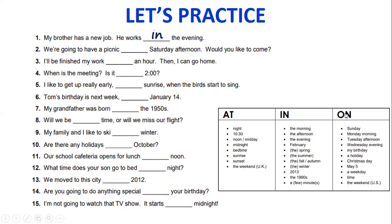On. Cuando hablamos de días específicos, on Sunday, on Monday morning, on Tuesday afternoon, on Wednesday evening, on my birthday, on a holiday, on Christmas day, on May 5th, on a weekday, on time, on the weekend. Vean que aquí en el American English para weekend utilizamos on, y en el British English utilizamos at. Y por qué si para morning afternoon usted dice que se usa in, por qué en combinaciones como Monday morning, usted utiliza on? La respuesta es porque lo hacemos en relación al día. On Monday morning, on Tuesday afternoon.